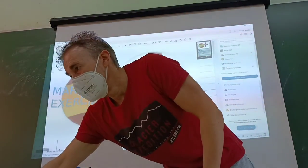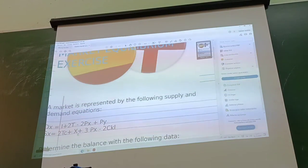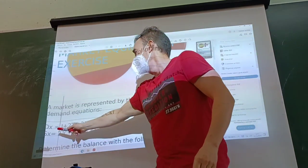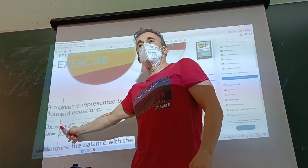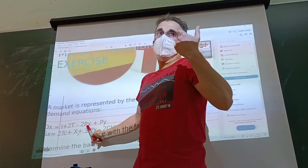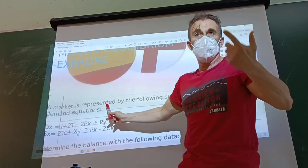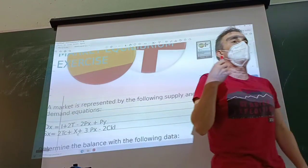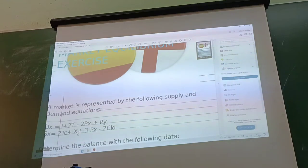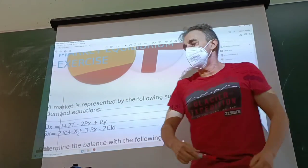First of all, a market is represented by the following supply and demand equations. This is the demand. The factors are: income, taste, prices of the product, and prices of another product. Remember that the other product could be complementary or substitutive.